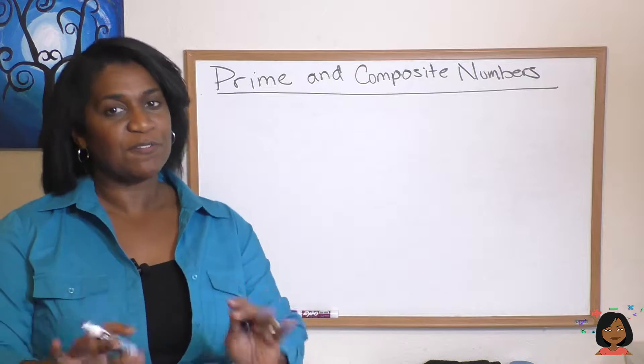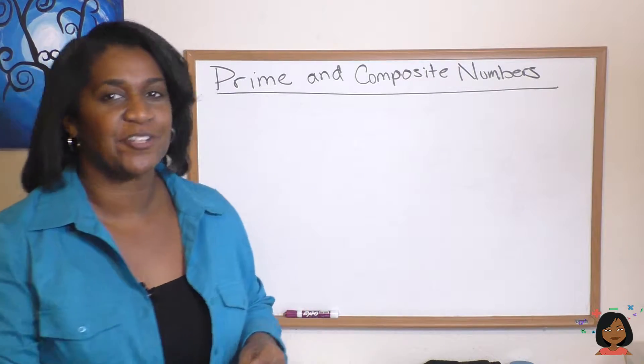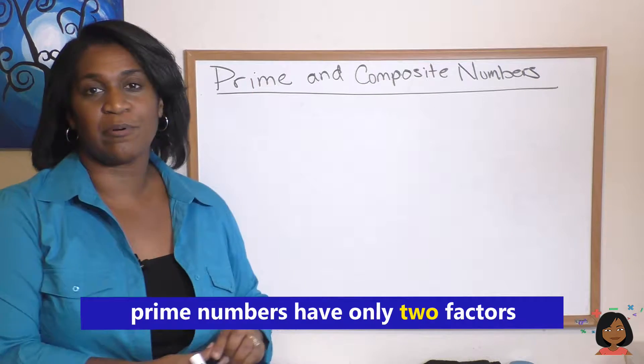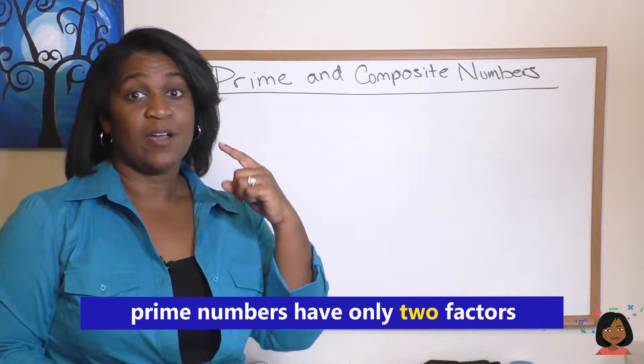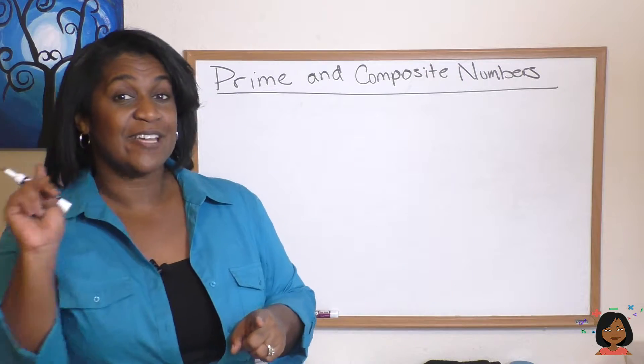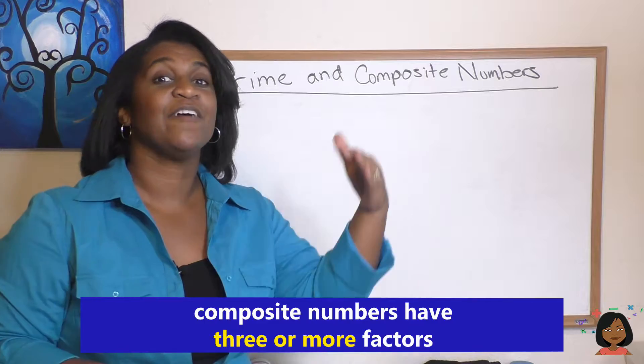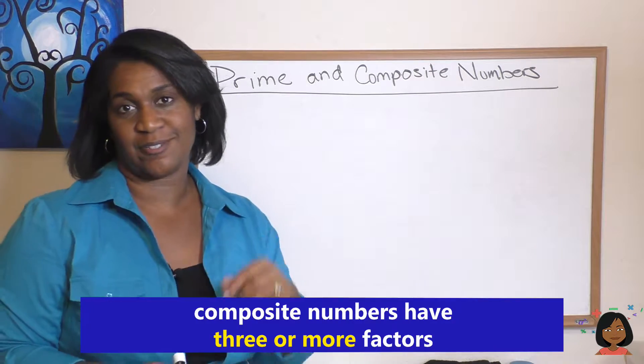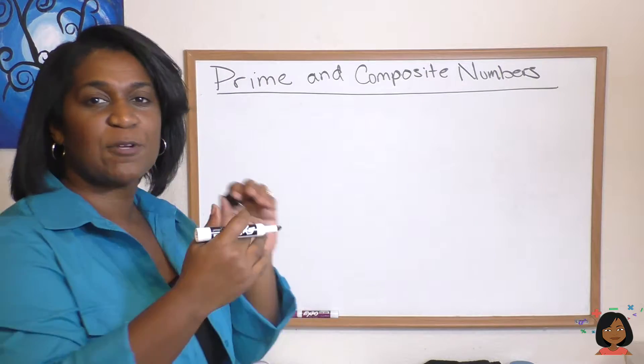Let me first give you some definitions. Prime numbers only have two factors: they have the number one and they have itself. That's prime. Composite numbers have three or more factors. All right, let's see what this actually looks like in real life. So let's look at the numbers between 1 and 10 and figure out which numbers are prime and which numbers are composite.